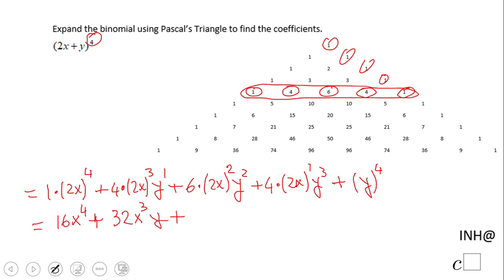Plus, now we have 2x squared here. The quantity 2x squared, that is going to be 4x squared times 6, that will be 24x squared y squared. Plus, and here we have 2x to the first power, that is just 2x times 4 is 8x, 8x y cubed.